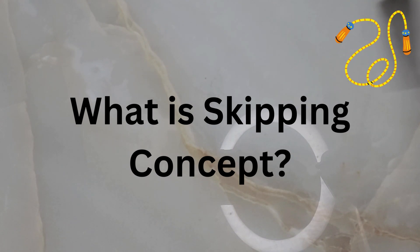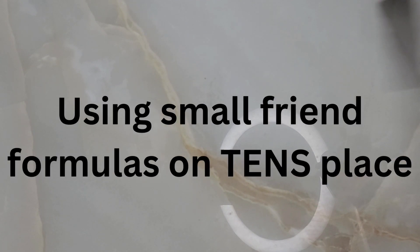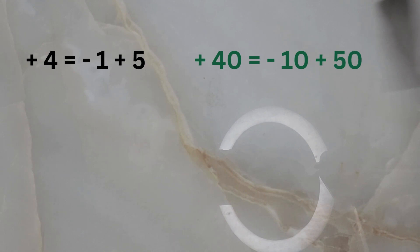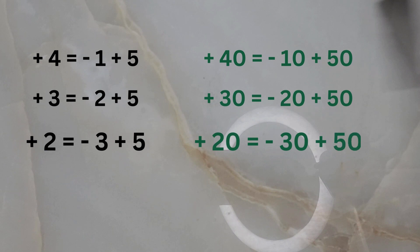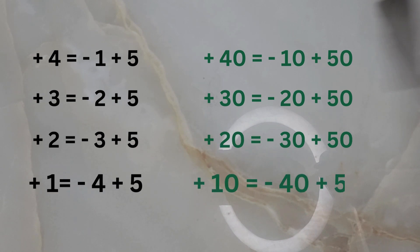Let us today learn about the concept of skipping on abacus. The skipping concept on abacus simply means using the small friend formula on the tens place. The formula for adding four becomes the formula for adding three when used on tens place, becomes the formula for adding two when used on tens place, becomes the formula for adding one when used on tens place.